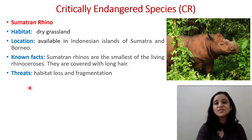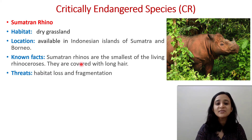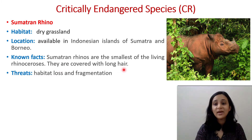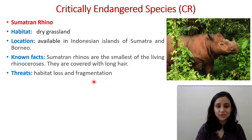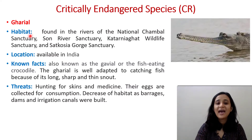The Sumatran Rhino is also under Critically Endangered. Its habitat is dry grassland, available in the Indonesian islands of Sumatra and Borneo. Sumatran rhinos are the smallest of the living rhinoceros and are covered with long hair. Threats include habitat loss and fragmentation.